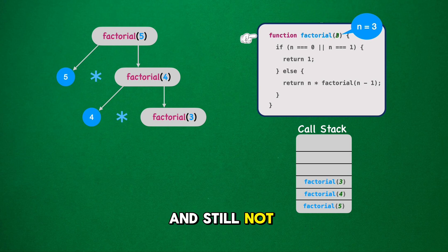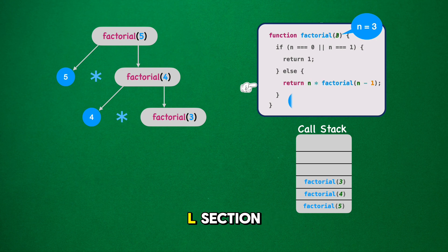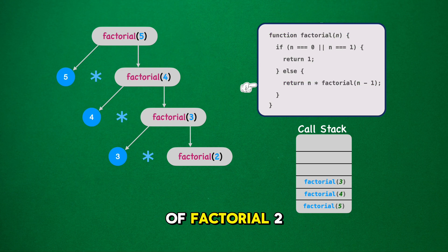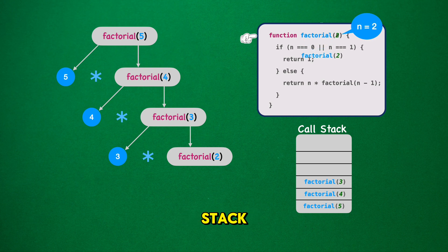Since n is 3 and still not equal to our base case of 1 or 0, we proceed once again to the else section. This leads us to 3 asterisk factorial 2. In our visuals, we prepare to multiply the number 3 by the outcome of factorial 2, which is our next step. We call factorial 2, and add it to the stack, placing it carefully above factorial 3.